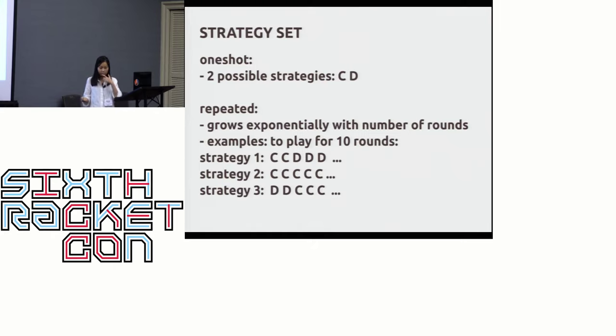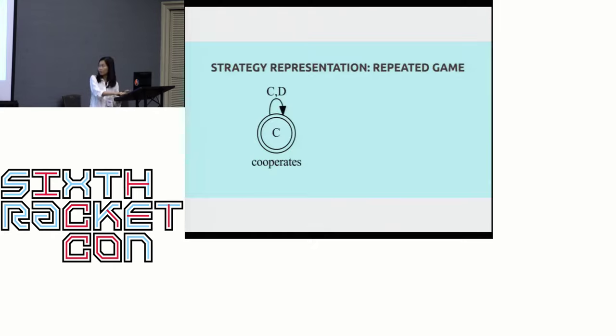We need some kind of strategy representation, and we represent the strategies using the finite state machine. Here I show the machine that has only one state. It plays cooperate. The arrows mean that if the other cooperate or defects, whatever the other does, this machine will stay in the state of playing cooperate. This game will have two unconditional machines: always cooperate and always defect.